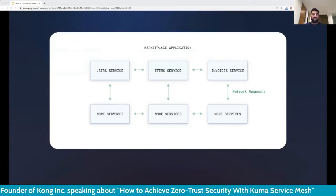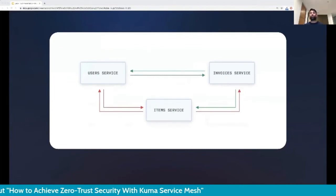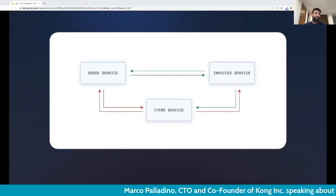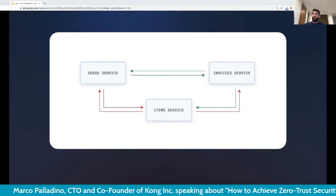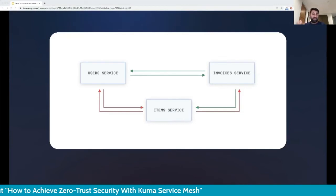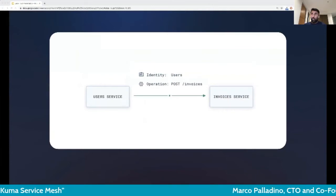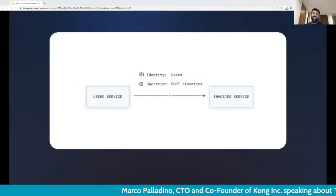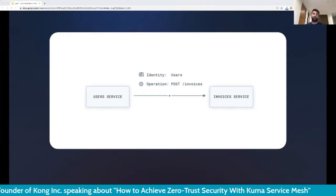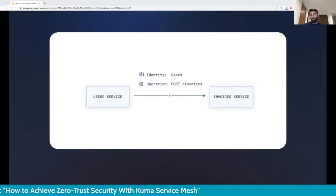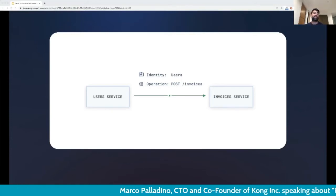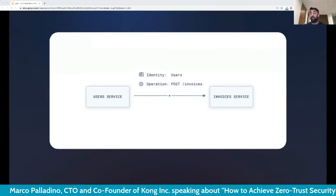To determine security rules over the network, we must do a couple of things. First, set up permissions — for example, the invoices service can query the items service but not vice versa — and check those permissions on every single request. We can either ask application developers to write security checks from scratch for every new service, or we provide the security layer on top of something else that comes for free to the application teams, so they can focus on building their service rather than building the underlying security infrastructure.